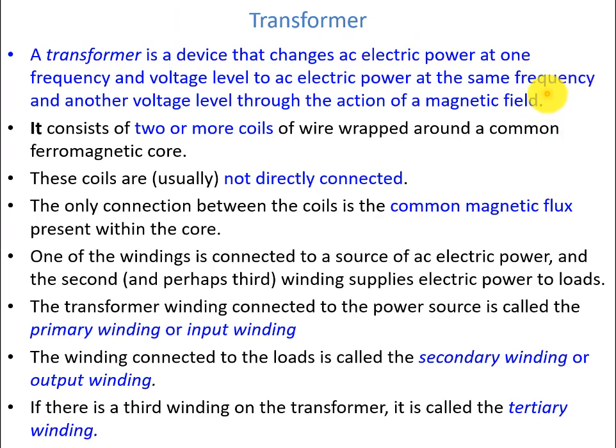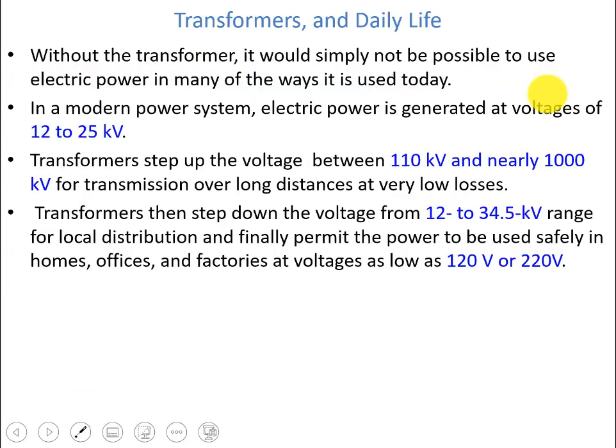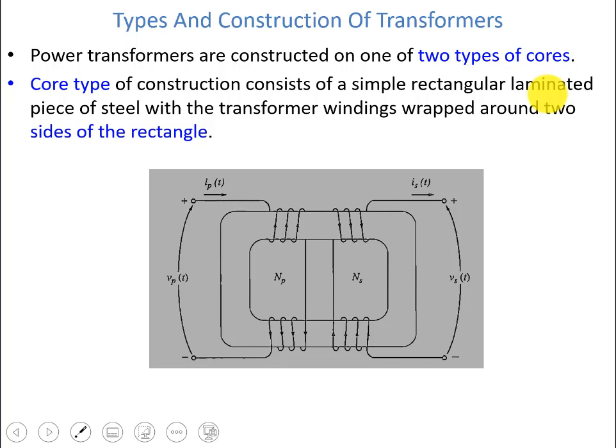We have seen that transformers have two windings: one is called the primary winding where we have the input, and the secondary winding where we have the output. Sometimes there is another winding called the tertiary winding. Transformers can be used at different locations to step up or step down voltages at different positions in the power system.